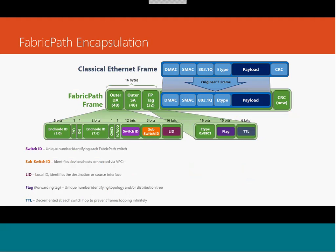The FabricPath frame consists of: the classical Ethernet payload encapsulated within an outer FabricPath frame containing the outer destination address, outer source address, FP tag, and CRC. The outer destination address contains the switch ID, sub-switch ID, and LID. The sub-switch ID is only used when running VPC+; otherwise it's set to zero. The FabricPath Ethernet type is 0x8903 — if you see this in a sniffer capture, it is a FabricPath frame. The TTL bit in the frame prevents loops: at each hop the TTL is decremented, and when it reaches zero the frame is dropped, avoiding loops the same way TTL works in routing.